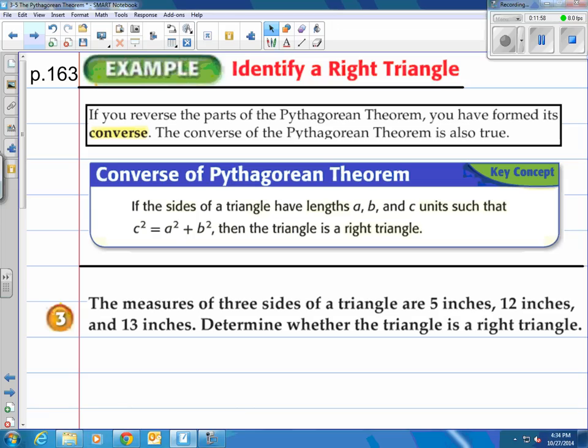All right, moving on. It says here, if you reverse the parts of the Pythagorean theorem, you have formed its converse. The converse of a Pythagorean theorem is also true. And look at the converse of the Pythagorean theorem here as a key concept. If the sides of the triangle have lengths A, B, and C units such that c² = a² + b², then the triangle is a right triangle. So basically, they're saying if you actually are given three lengths of a triangle and this holds true, the longest one that they give you, the side that is the longest, is equal to the two shorter sides squared and added together, then you have a right triangle that you have made.